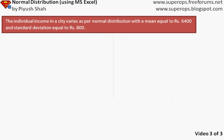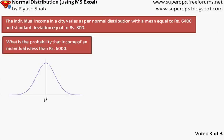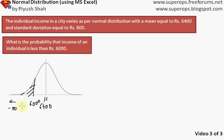Here is our basic numerical: the income of individuals in a city is normally distributed with a mean of 6400 and a standard deviation of 800. Problem 1: what is the probability that the income of an individual is less than 6000? We draw the curve, place the mean at 6400, and mark 6000 to the left. We want the area from negative infinity to 6000. Excel by default gives the cumulative value from negative infinity, so we can use it directly.